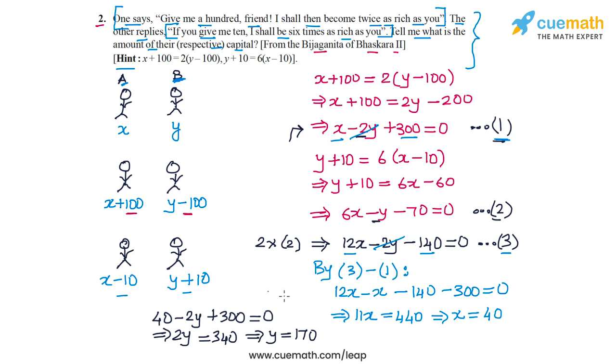So what we have concluded is that X is 40 and Y is 170, which means that the original money that A has is Rs. 40 and the original money that B has is Rs. 170. Let's see if this makes sense.